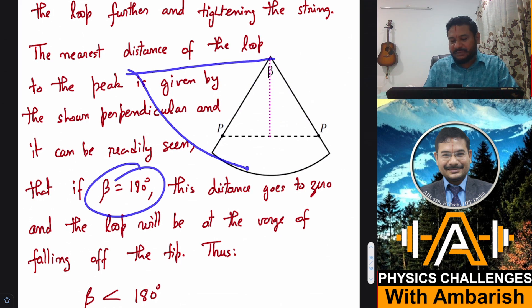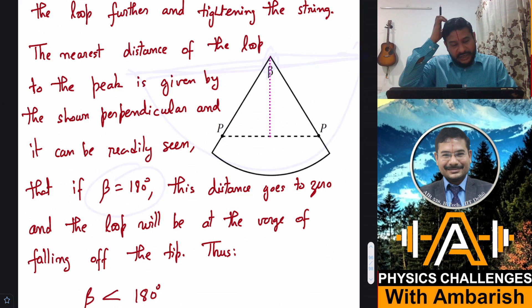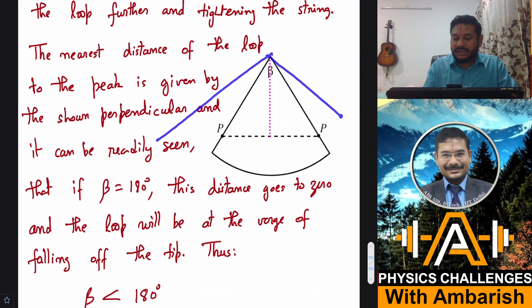If you keep increasing beta and if beta becomes 180 degrees, what happens? It becomes a semicircle. And if it becomes a semicircle, then this perpendicular distance will go to zero, right? Because it will be passing through the apex itself, right? From P to P because P has to be a point somewhere over here. So if it's a semicircle, then it goes along the cut.